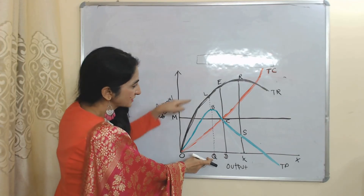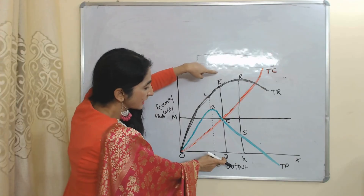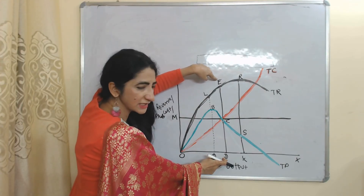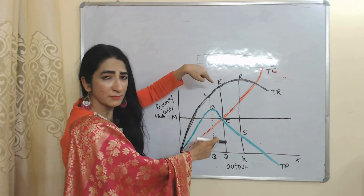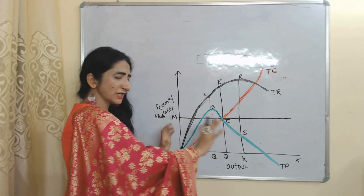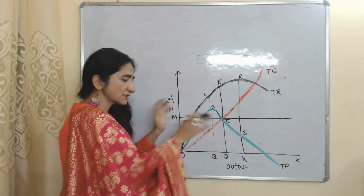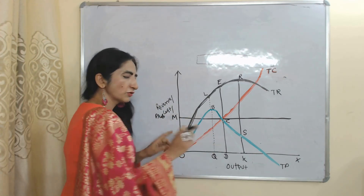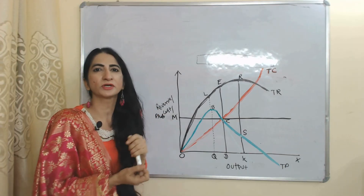At profit maximization output, our sales revenue is LQ. But at OD amount of output, our sales revenue is ED, which is higher compared to profit maximization output. Plus, we are not doing any compromise with minimum profit — we are receiving minimum profit also. So OD amount of output is our equilibrium output according to this model.